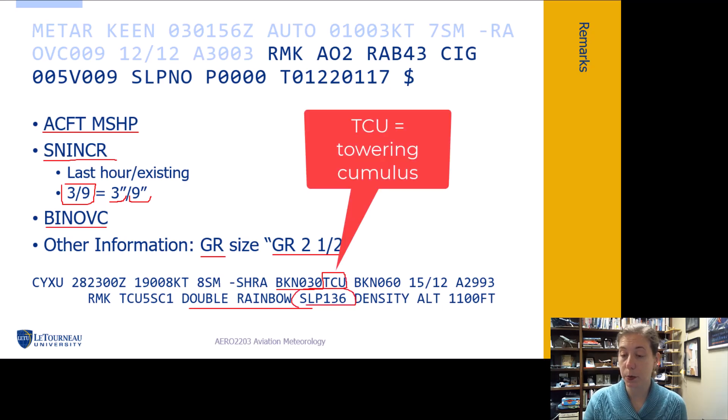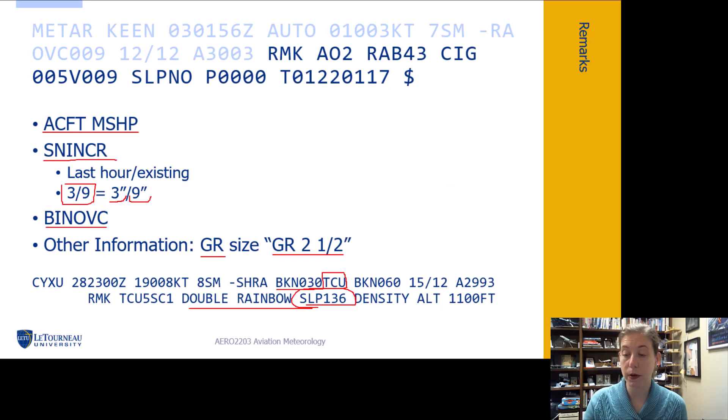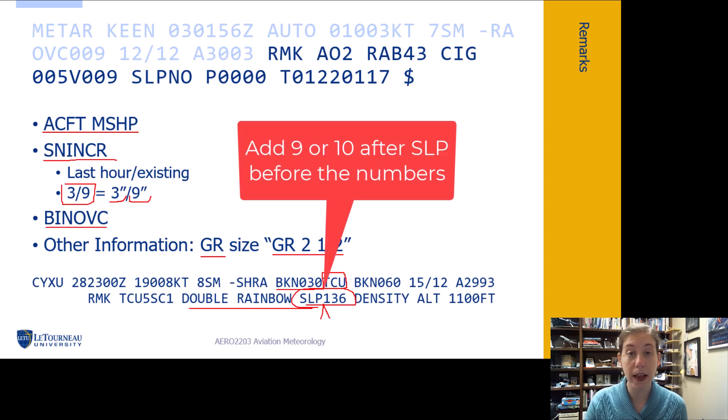Let's practice on the sea level pressure right there. So SLP 136. What would get us closer to 1000 millibars, nine or 10? Hopefully you said 10 because that would give us 1013.6 millibars close to standard pressure actually that day. Interestingly, also the temperature is 15 degrees Celsius. So we're really close to a standard day. CR altimeter 2993. Very close to a standard day.